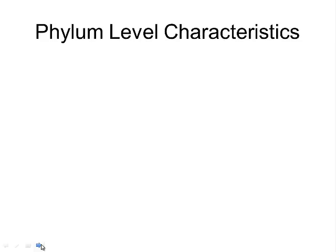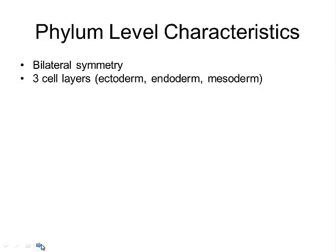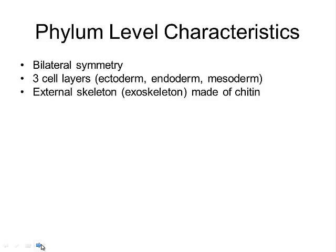Starting off with the phylum-level characteristics — these are the characteristics that all organisms in this phylum share. They have bilateral symmetry, which means if you split them in half they'll look the same on each side. They have three cell layers: ectoderm (outer layer), endoderm (inner layer), and mesoderm (middle layer). They also have an external skeleton made up of chitin, which essentially forms an exoskeleton.